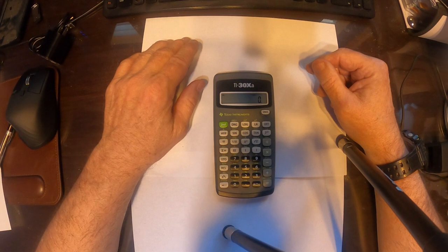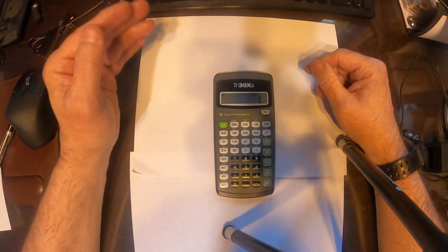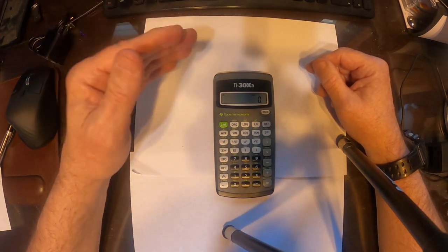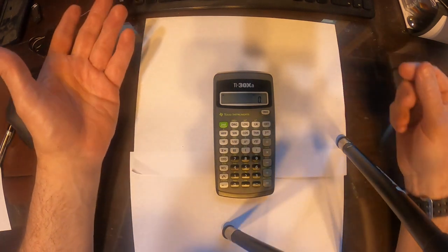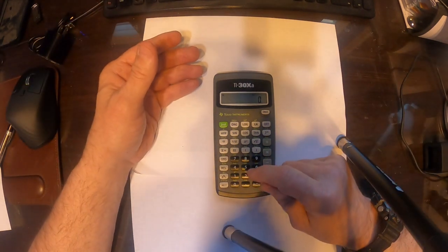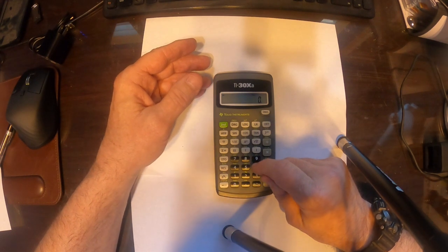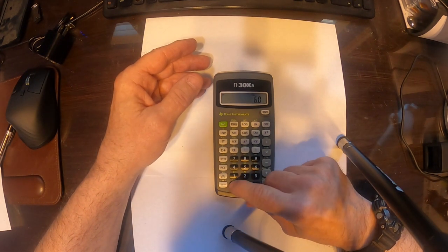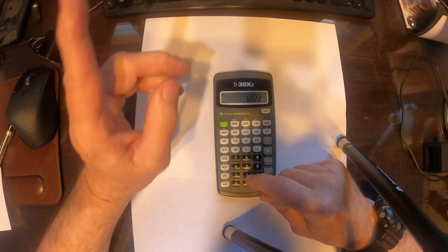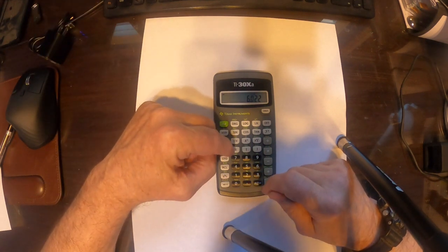Probably the first thing you should know is when you're putting exponents in, that is something times 10 to a power, here's how you do it. Let's say you're putting in 6.022 times 10 to the 23rd. Well, you put the first number in first, 6.022, then see that EE there?